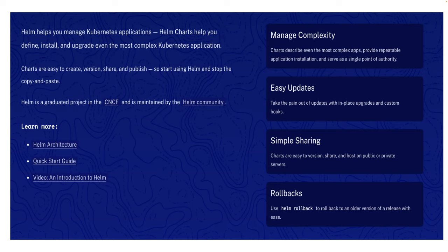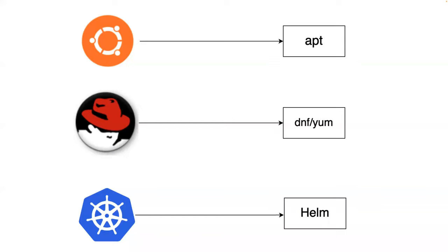One major advantage of Helm over other package managers is that Helm is very easy to learn, easy to use, and has very good documentation. Understanding the architecture of Helm is also not complicated, which we'll cover in this video. Helm also supports upgrades as well as rollbacks. For example, if you've installed Prometheus or ELK stack using Helm and you want to roll back or upgrade versions, Helm supports that too.